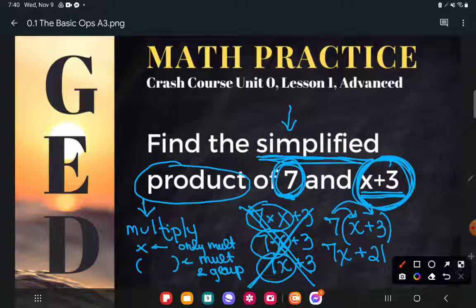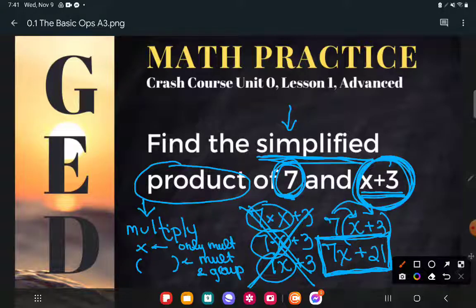And so this is really what separates my A students from my B students in algebra. My A students know when to stop. This is as simple as my expression is going to get if nobody tells me what x is. So if x is unknown, I cannot make this any simpler. I'm going to stop right here. This is the simplified product of seven and x plus three.